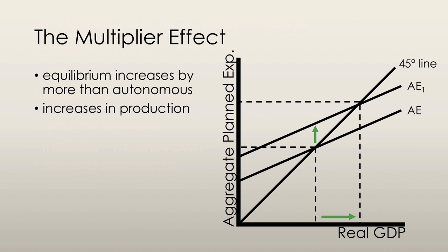For example, if equilibrium increases by 200 and the initial autonomous spending was 50, then the induced spending is calculated to be 150, because 150 plus 50 equals 200. All of this previous analysis applies even if there's a decrease in autonomous spending — then we'll have an induced decrease in consumption spending. So it applies both ways.